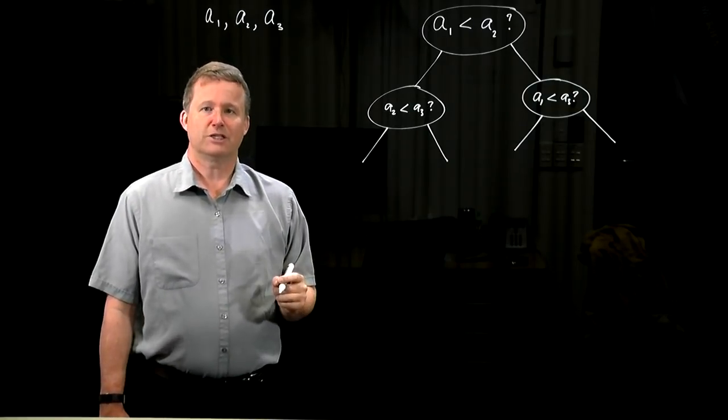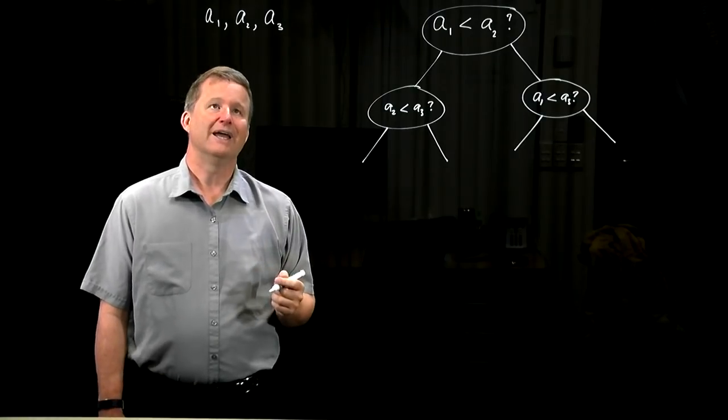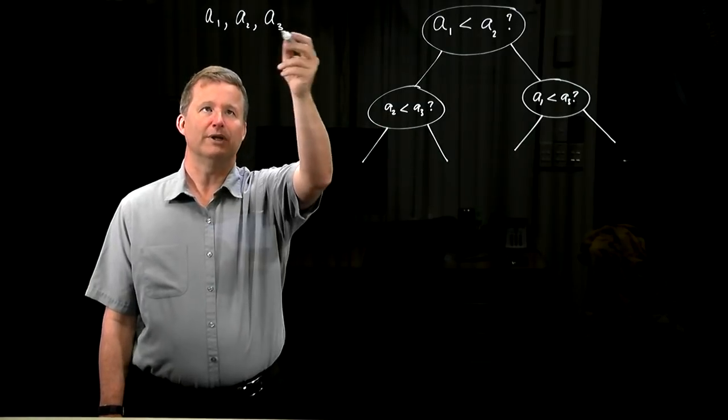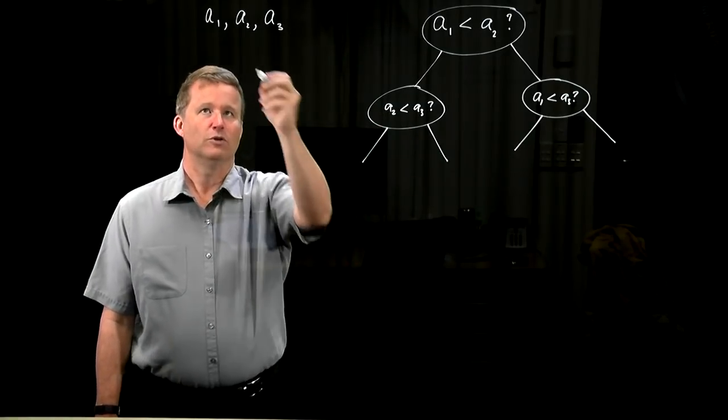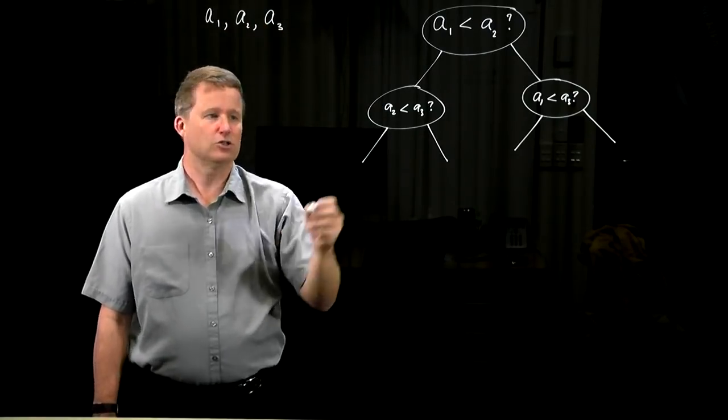Now, we would do the next pass. We would swap the maximum to the end. So, in this case, a3 is the maximum. We don't have to do anything. Now, we have to find the maximum of the initial sublist of size 2.